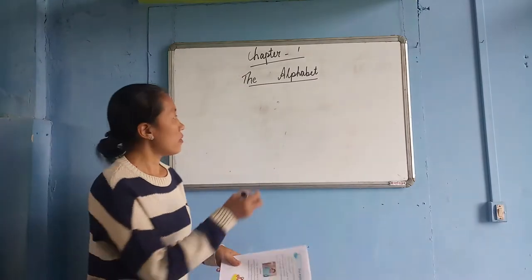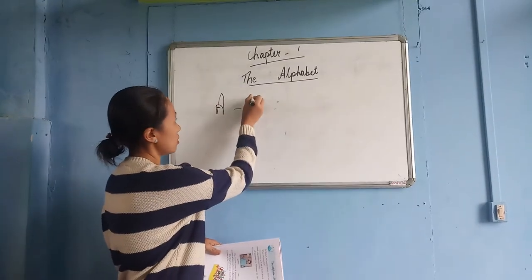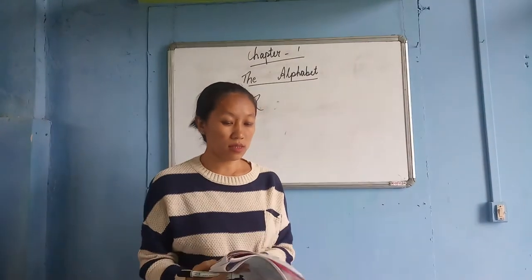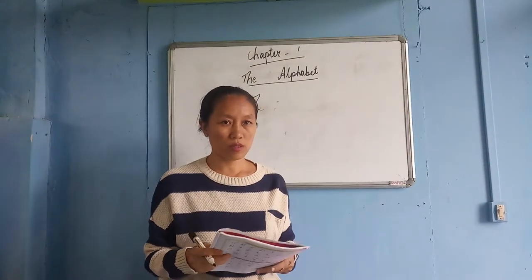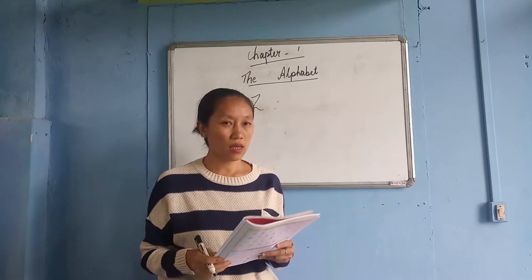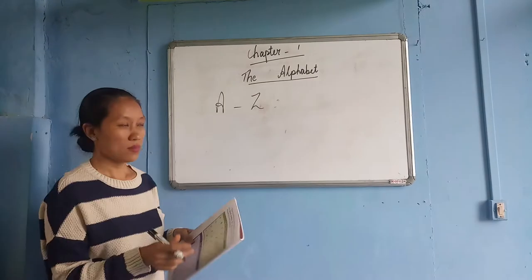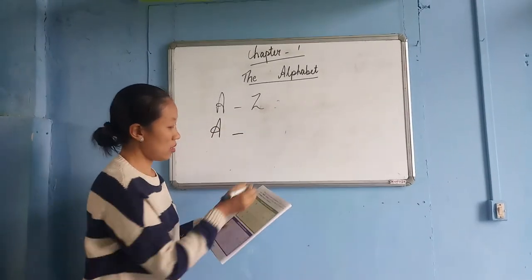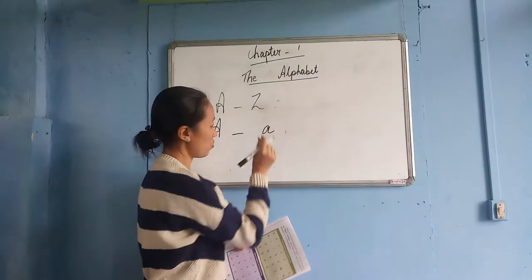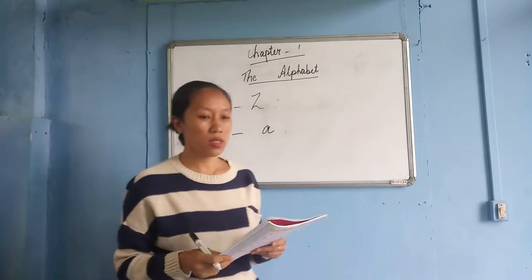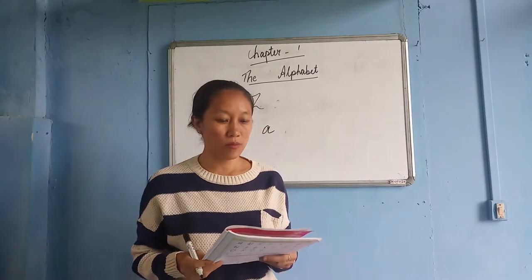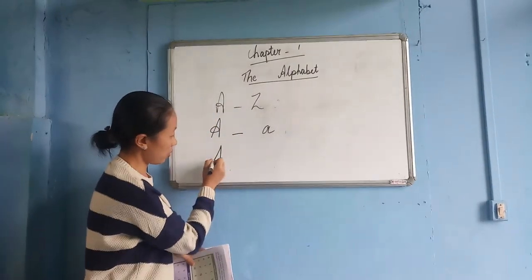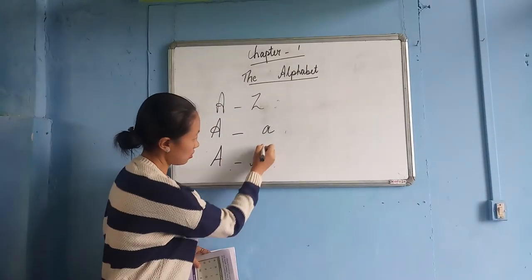The alphabet is A to Z. These 26 letters are used in two forms: capital letters and small letters. Both these forms can be written in printed form and cursive form. This is printed and this is cursive.